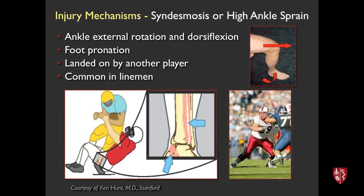An example is a football player who's running and another player tackles him, coming in from the lateral aspect of the leg. It looks like the foot is really externally rotated — a force comes in laterally along the fibula, causes distraction medially like the deltoid, and basically we're looking at injury of this syndesmotic complex. Another situation is offensive or defensive linemen who plant their feet very firmly and externally rotate, causing these types of injuries.